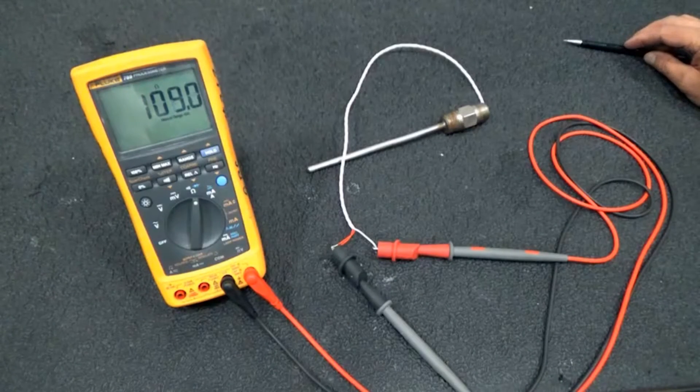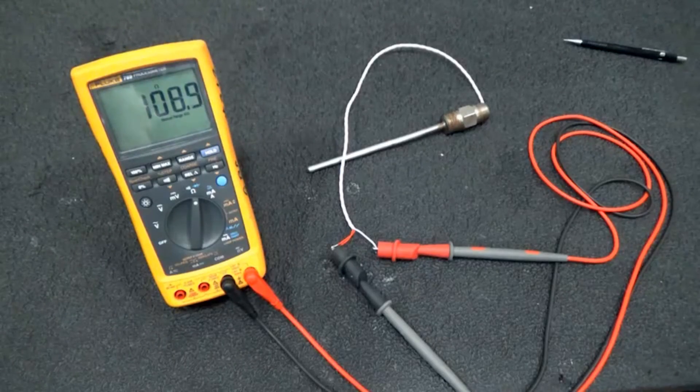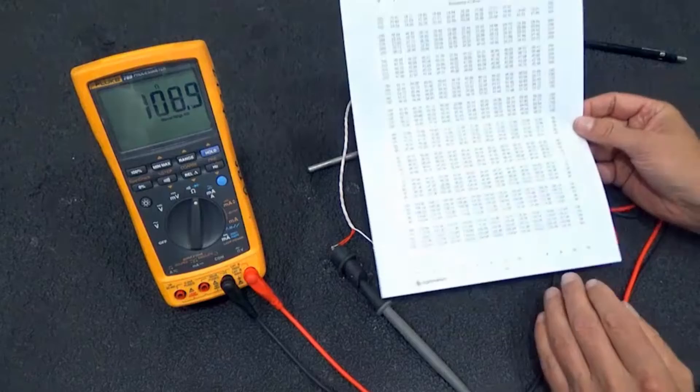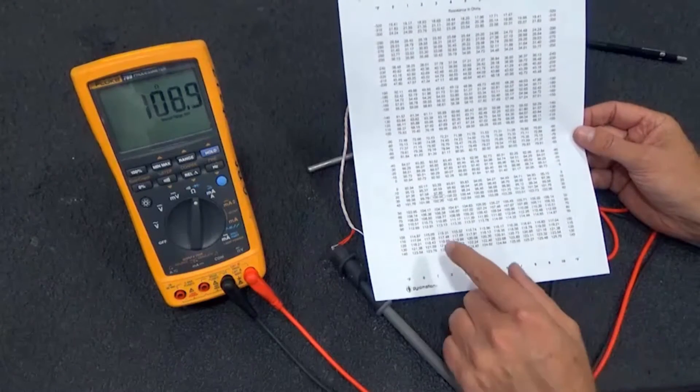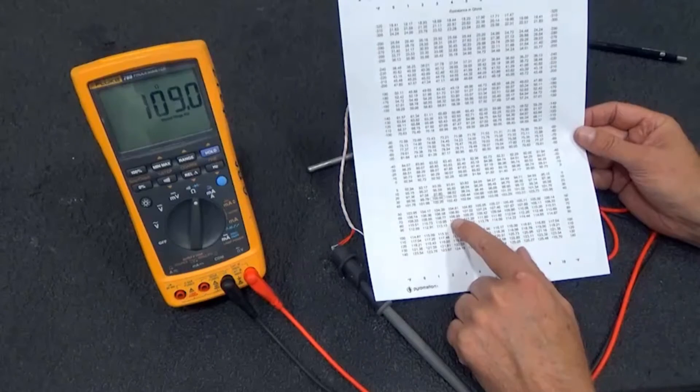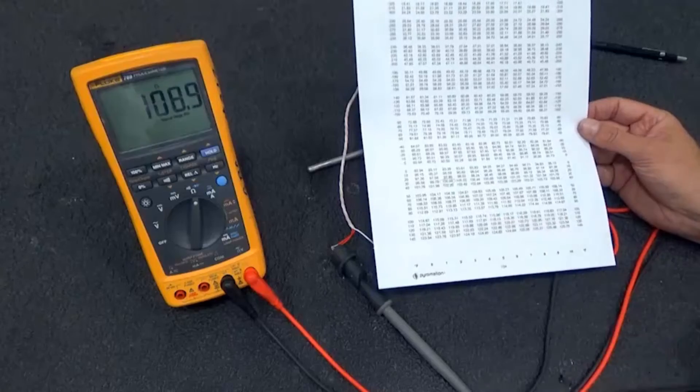We're reading 108.9 to 109 ohms. And if we wanted to, we could go look on a table, and I have one here, and we could say, all right, 109 ohms. That's about 73 degrees, and that makes perfect sense.